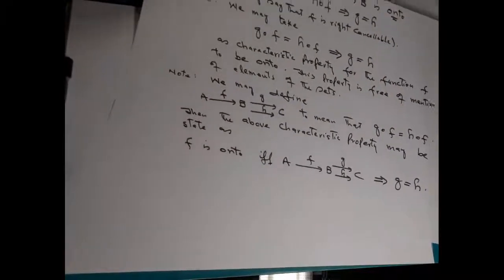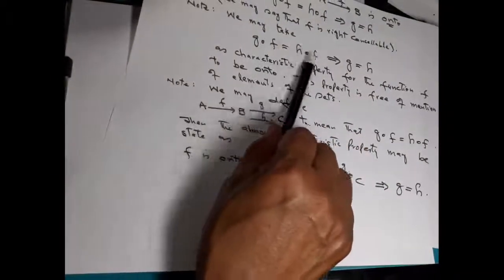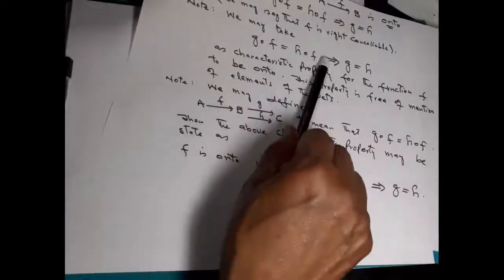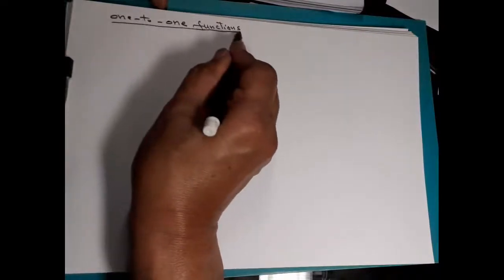So we were talking about onto functions, and for onto functions, we have proved a characteristic property: if this condition holds, then the function f is onto. Now we come to one-to-one functions. One-to-one functions are the functions you already know. These are also called injective functions. Onto functions are called surjective functions, and one-to-one functions are called injective functions.